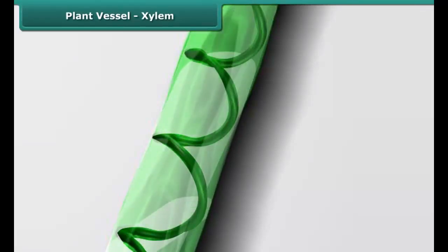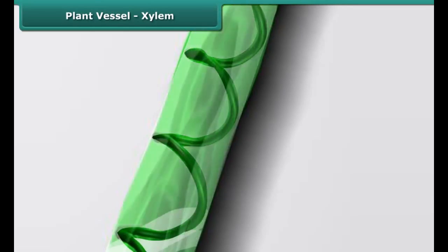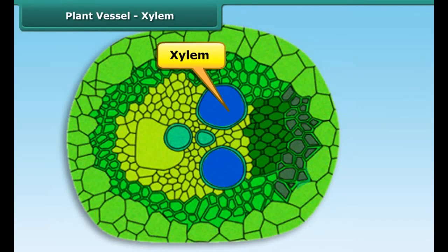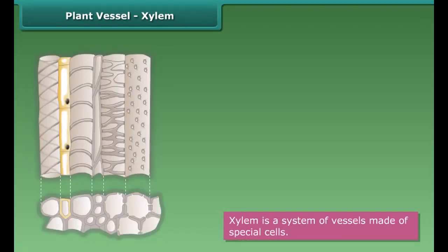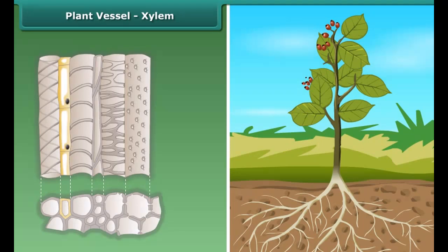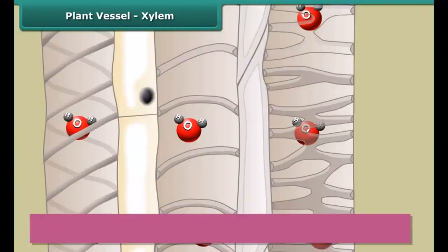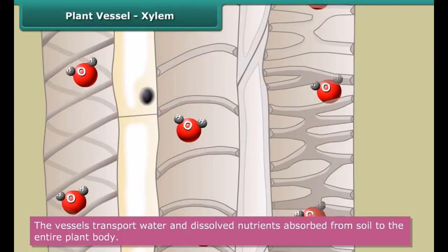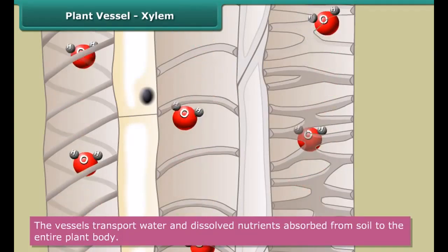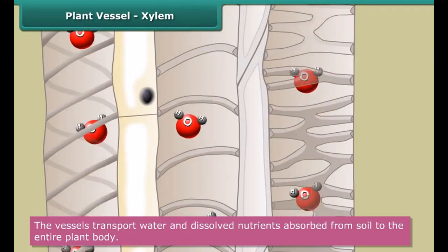A network of tube-like vessels runs through the entire body of a plant. This system of vessels is known as xylem. These vessels are made of special cells. They act as channels that connect the roots to the leaves through the stem and the branches. Xylem transports water and dissolved nutrients absorbed from soil to the different parts of the plant through this network of vessels.